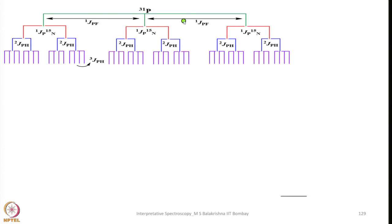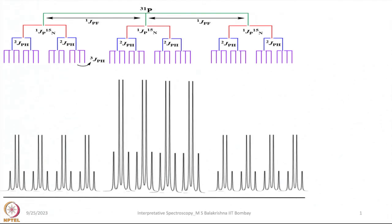First, phosphorus is coupled with 3 fluorine atoms to give a triplet, and then each line is coupled with 15N to give a doublet. Each line of this doublet is again split into a doublet because of 2-bond hydrogen coupling, and then each line is coupled with 3 hydrogen atoms present on silicon to give a quartet in 1:3:3:1 ratio. If you count all of them we have totally 48 lines, and the original 1:2:1 ratio is retained.